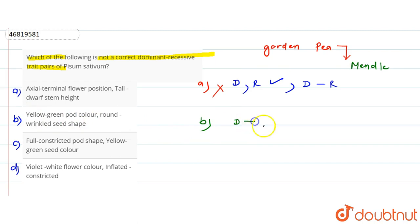If we talk about pod color, the dominant color is green. Here we have given yellow first, so this is incorrect. Yellow should be recessive, but here we have the opposite given.